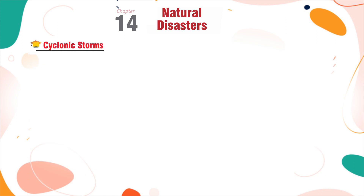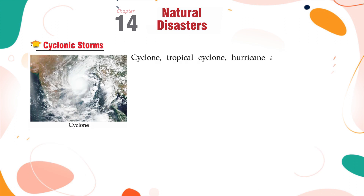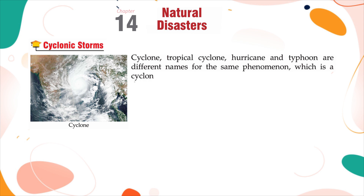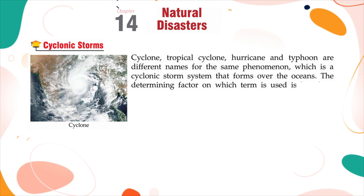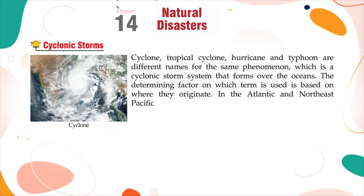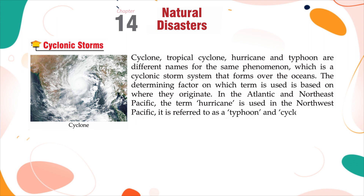Cyclonic Storms. Cyclone, tropical cyclone, hurricane and typhoon are different names for the same phenomenon — a cyclonic storm system that forms over the oceans. The determining factor on which term is used is based on where they originate. In the Atlantic and Northeast Pacific, the term hurricane is used; in the Northwest Pacific, it is referred to as a typhoon; and cyclones occur in the South Pacific and Indian Ocean.